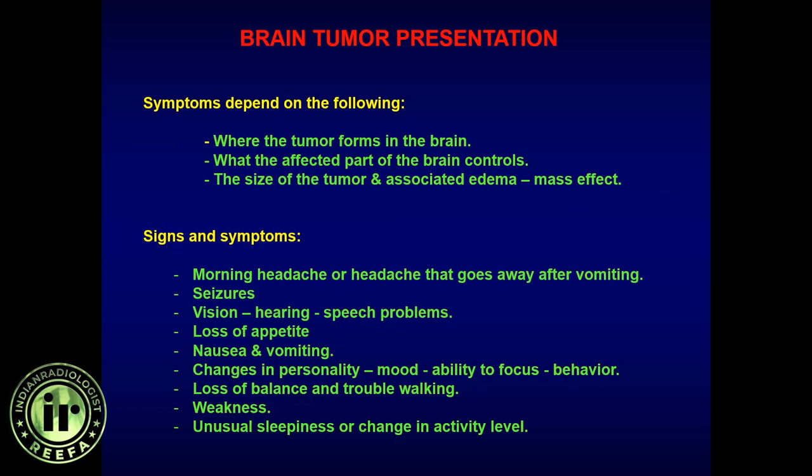How do these tumors present? Typically, patients come in with chronic headache, visual changes, or seizure. Often the first presentation is a seizure bringing the patient to the emergency room, and then we find underlying brain disease on MRI that turns out to be a brain tumor.